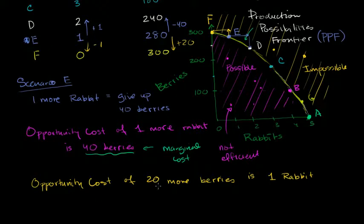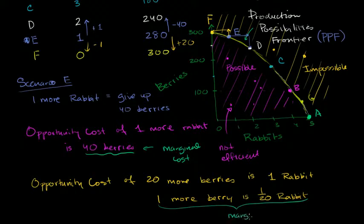If I want to write this as a marginal cost of one more berry, then I could just say, well, if 20 berries is one rabbit, you could essentially divide both sides by 20. So one more berry, one more berry, and I'll assume, for those of you who want to get technical, that it's somewhat linear right over here. One more berry, if we divide both sides by 20, is one more berry is 1/20th of a rabbit. So if I go for one extra berry, sitting in Scenario E, on average, I'm going to get 1/20th less of a rabbit. And when I phrase it this way, it is being phrased as a marginal cost.